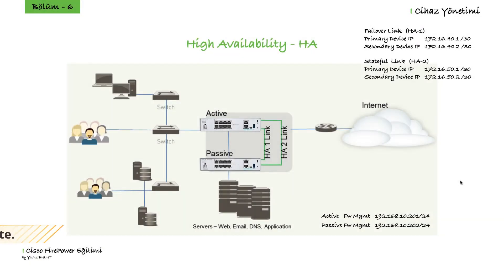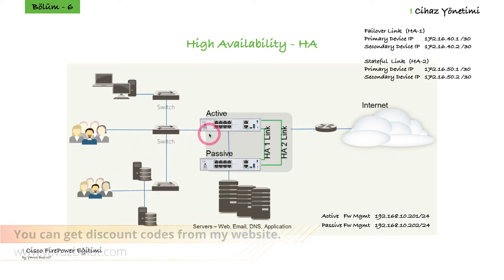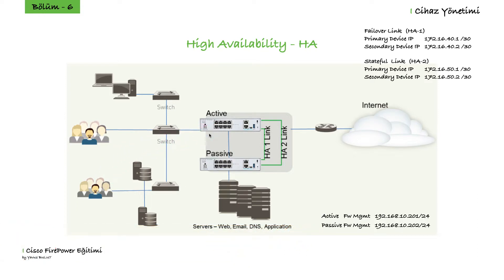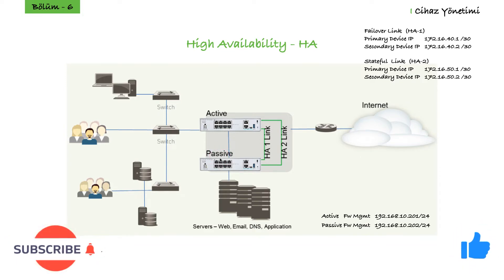In this lesson, we will cover the subject of high availability. We will add a second firewall to our network and make our first firewall active and our second firewall passive. Our users' traffic will pass through the active firewall. If our active firewall is disabled, our passive firewall will be activated automatically to ensure uninterrupted communication of our users.